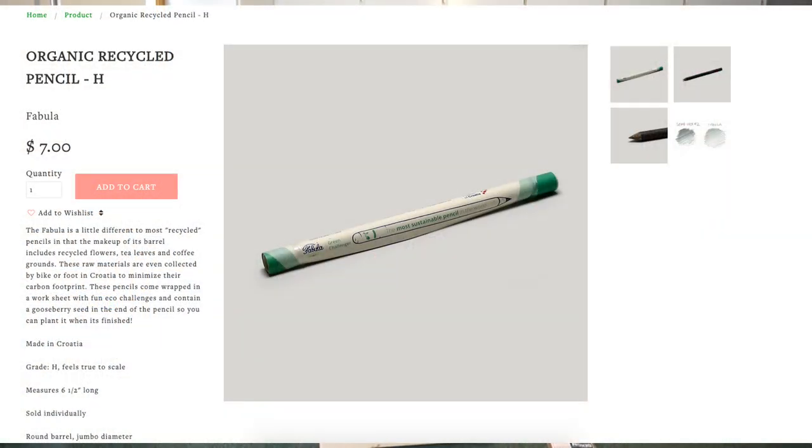This is called the Fabula. They're made over in Europe and they're made out of coffee grinds, tea leaves, and recycled flowers. So the biggest question I have is what does this thing actually smell like? But also, is it really worth seven bucks for a pencil?